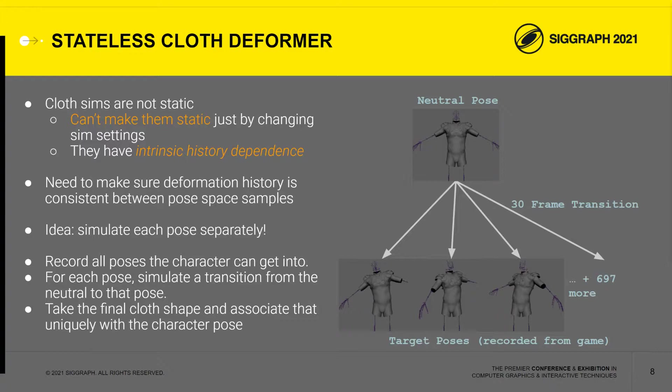Simulating all these separate simulations is the main pre-processing cost of Swish. To achieve the look we ended up shipping with, we used about 700 simulations for each cloth asset. There are potentially better ways of exploring the space of static cloth behaviour, such as by restarting the cloth simulation from previously recorded poses. However, we don't have enough control over the simulation to do this, because we used a closed-source commercial solver. Instead, we just take advantage of the independence of each simulation and run them all in parallel.